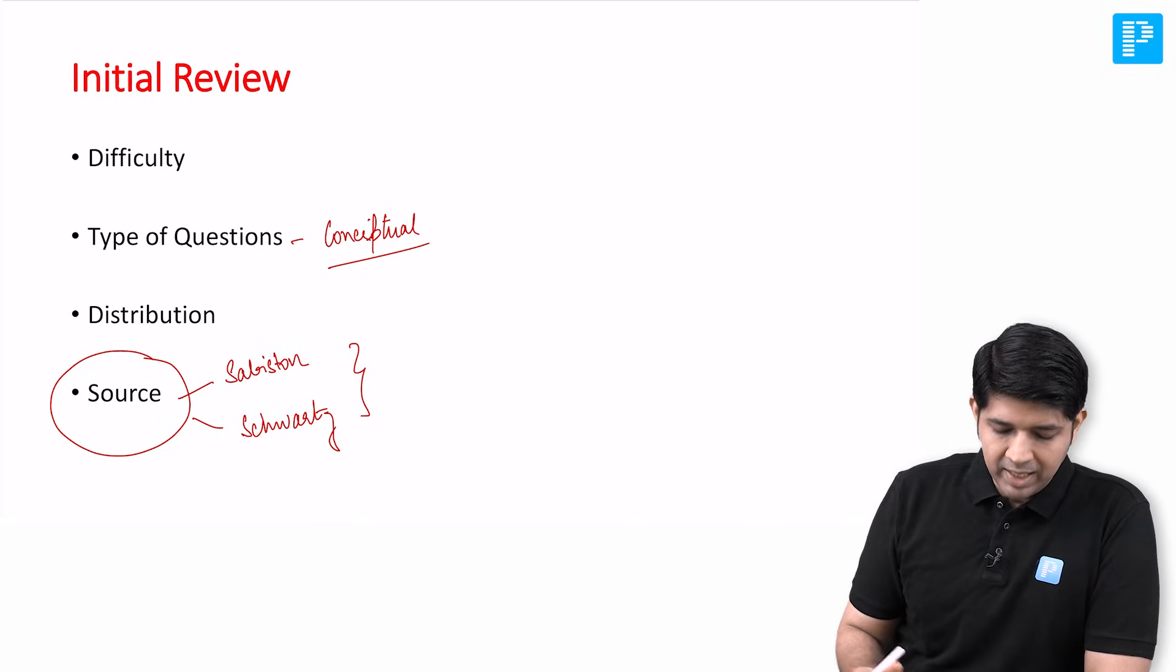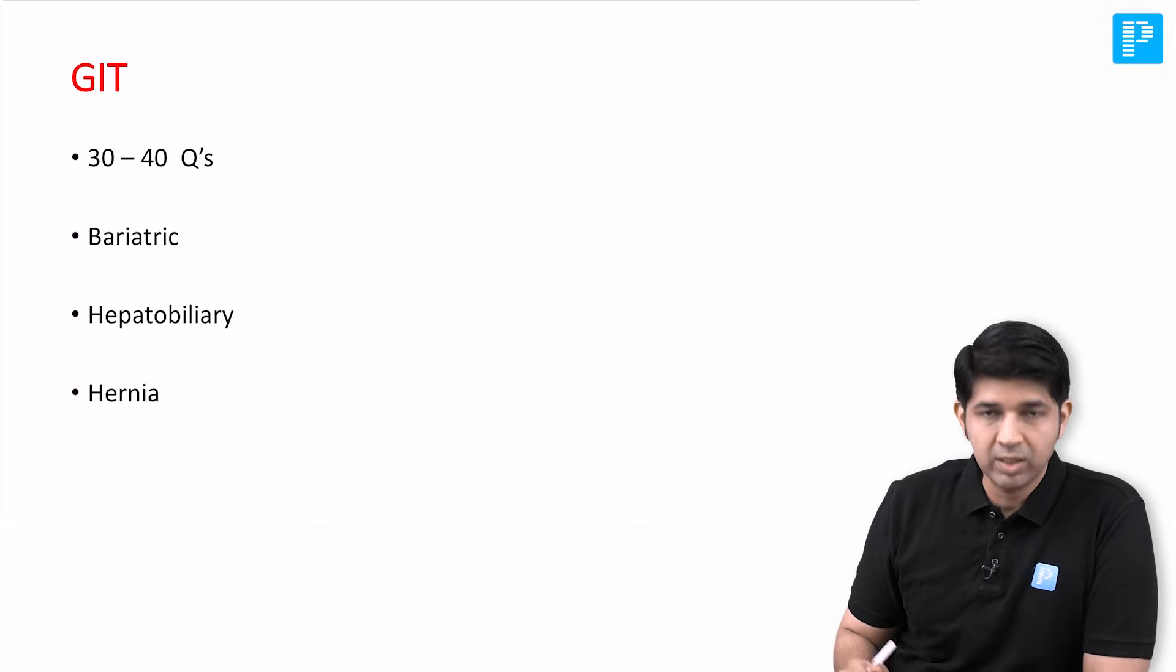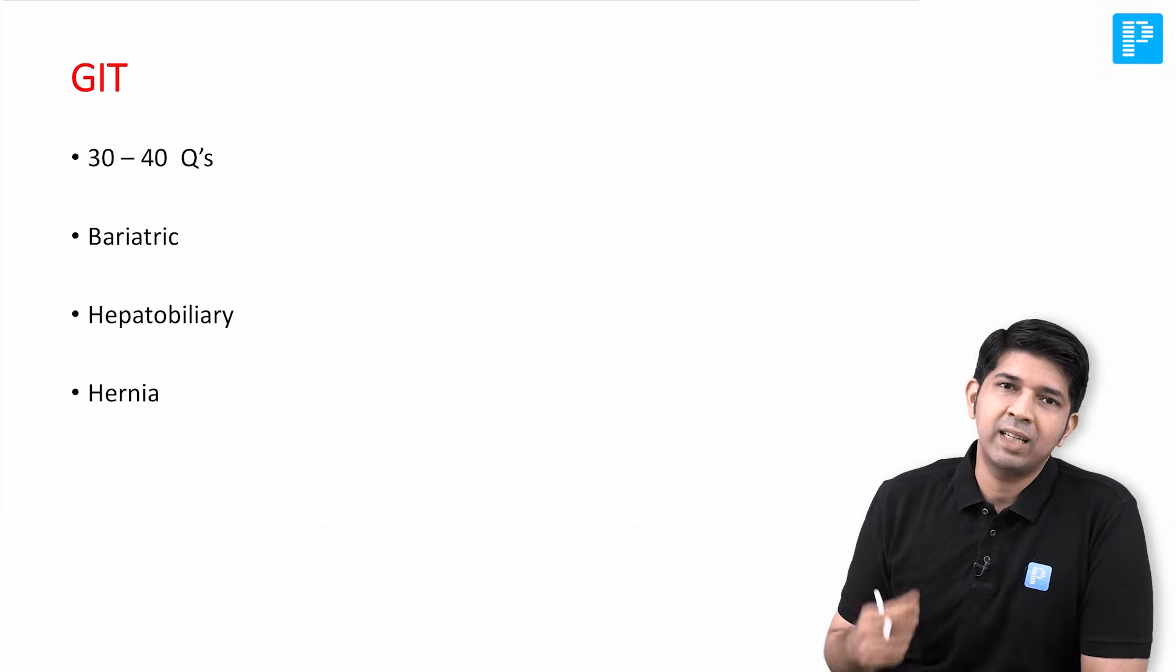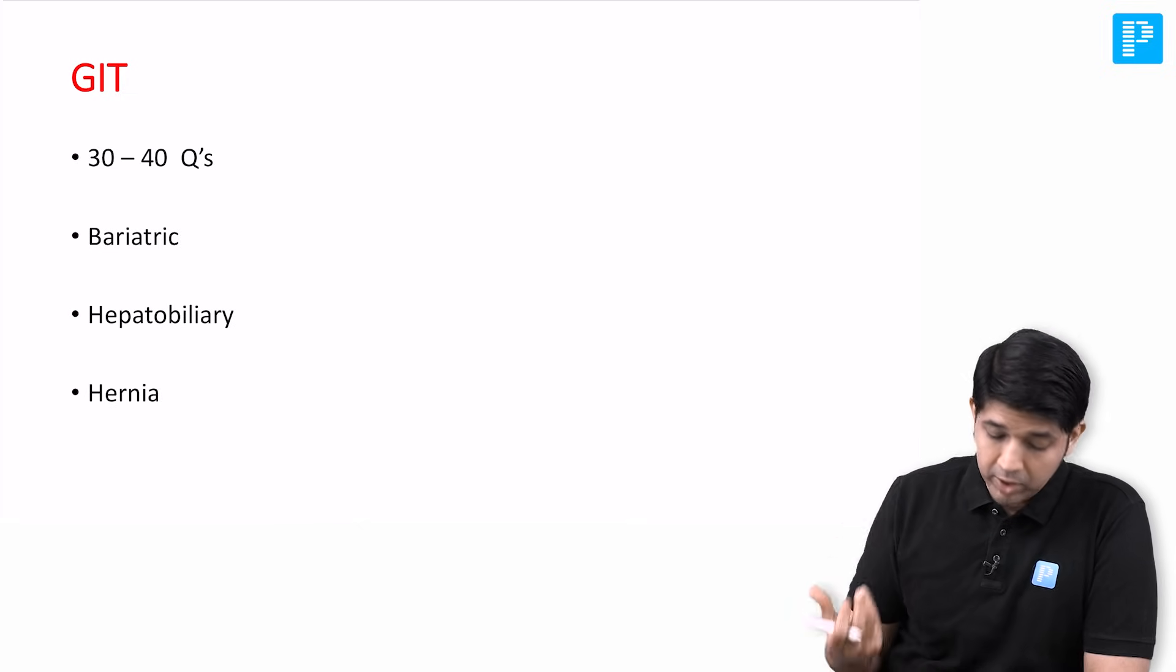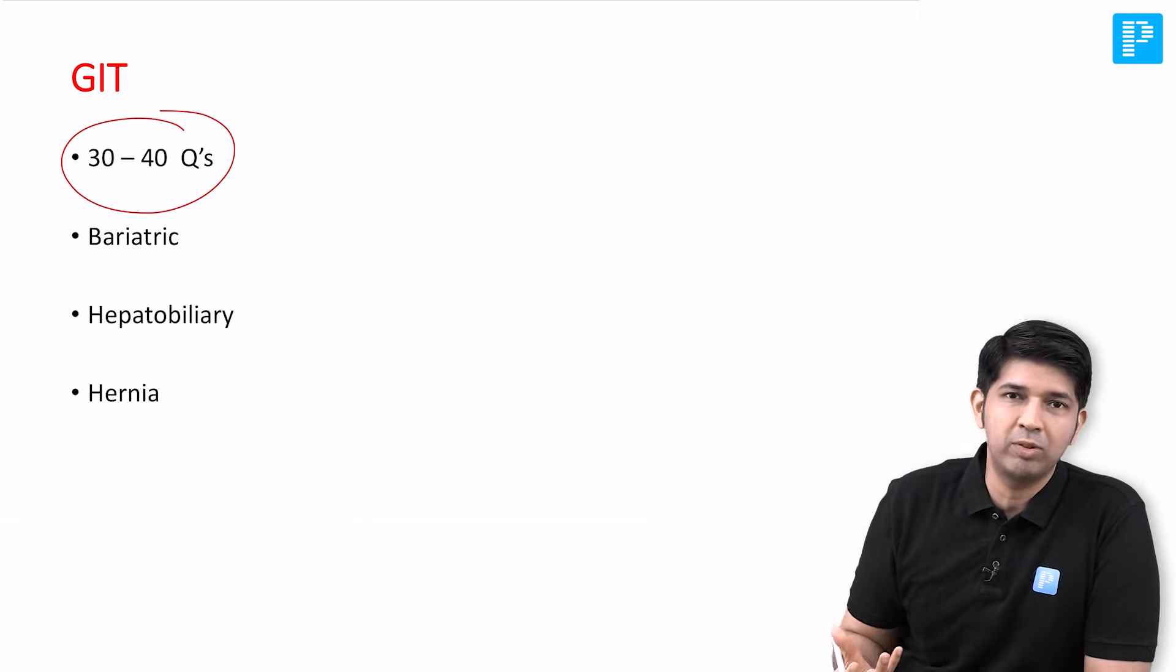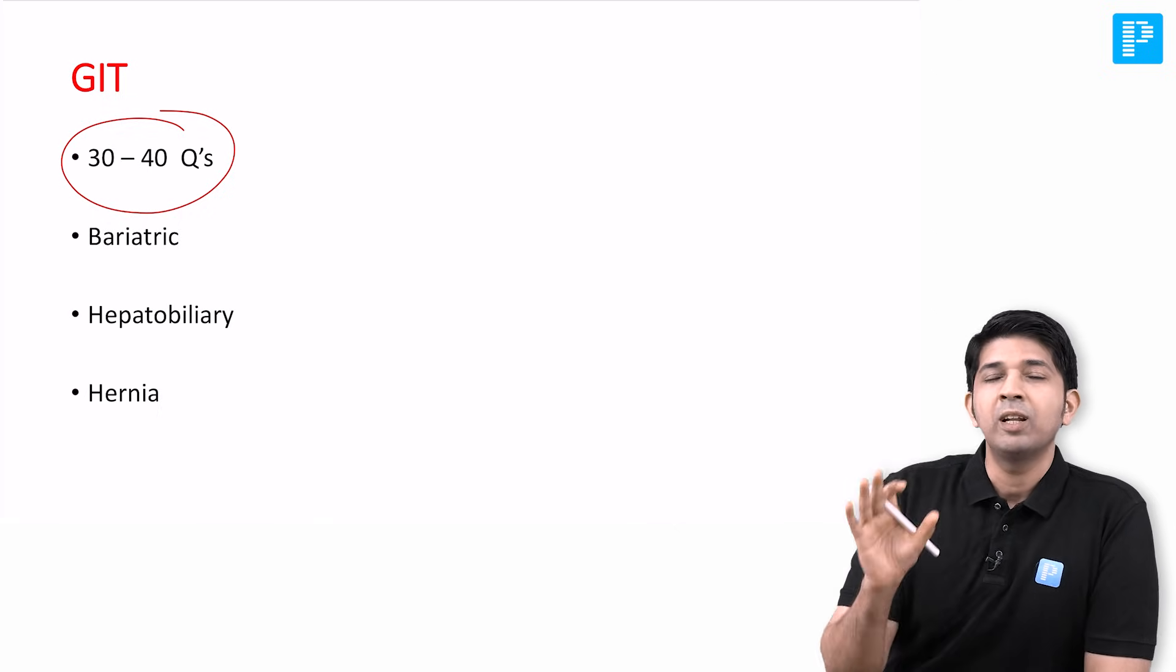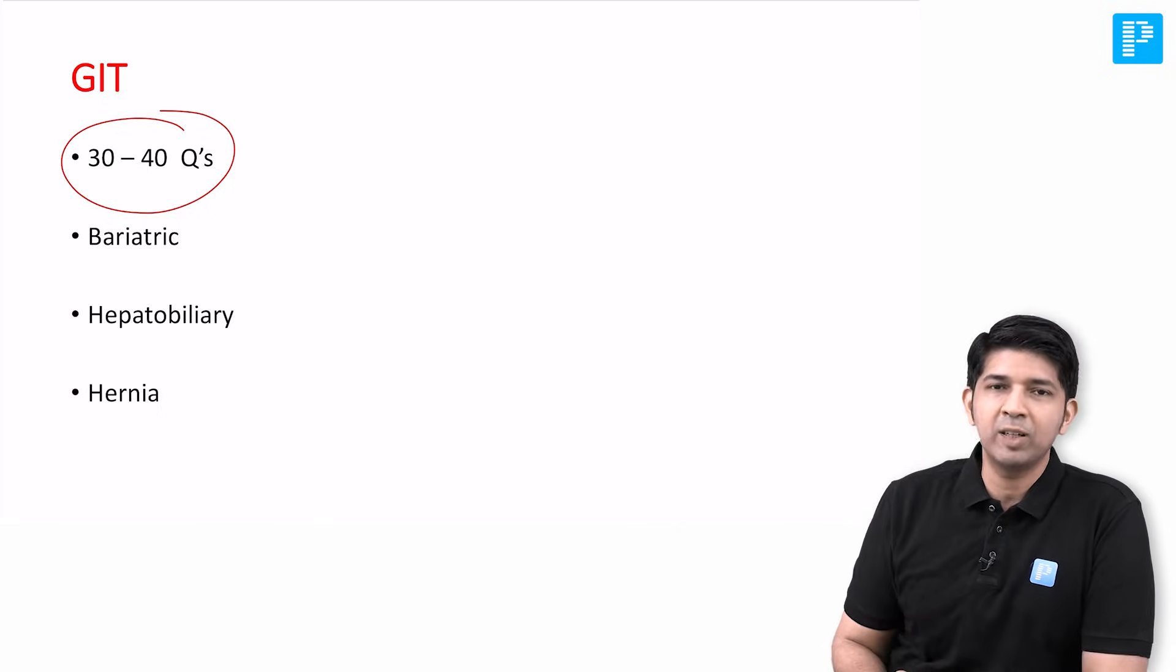Having said that, let's just look at the various questions that were asked with regards to the systems. Like I said, it was a GIT heavy question paper according to me. Almost 30 to 40 questions based on whatever I could calculate from the recall questions were from GIT.